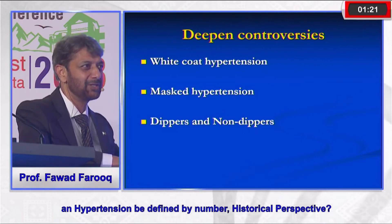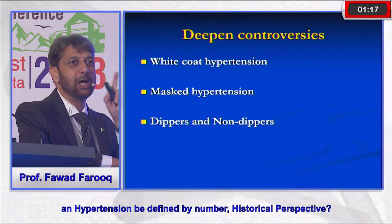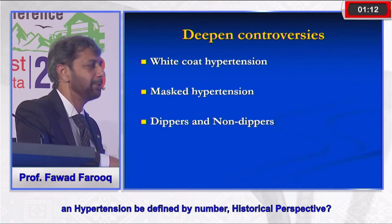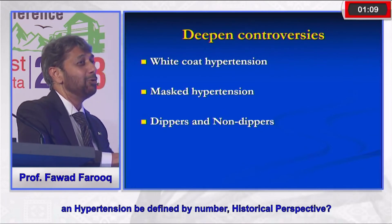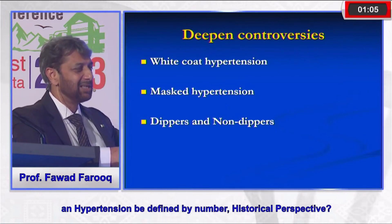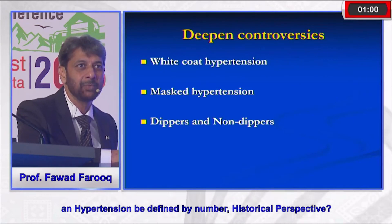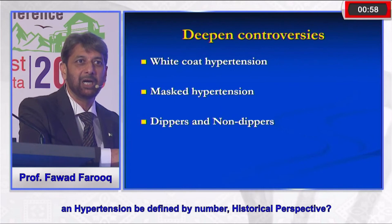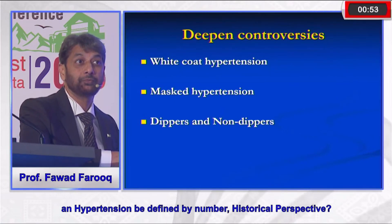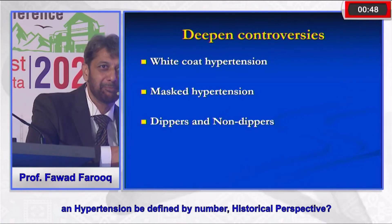The key point is that a single number should not be used to define hypertension. You must assess properly, measure blood pressure correctly, consider whether the reading reflects true blood pressure free from external or internal influences, validate with multiple readings and 24-hour monitoring, and only then decide about diagnosis, up-titration, or down-titration of treatment.